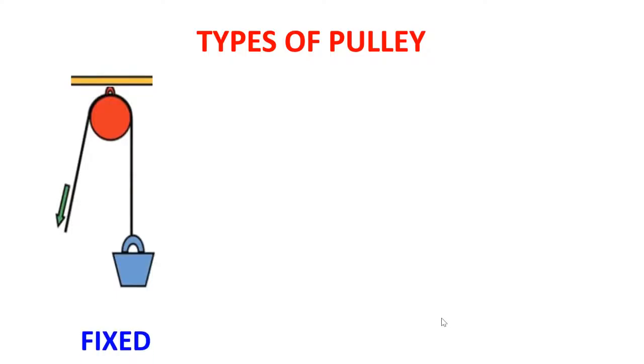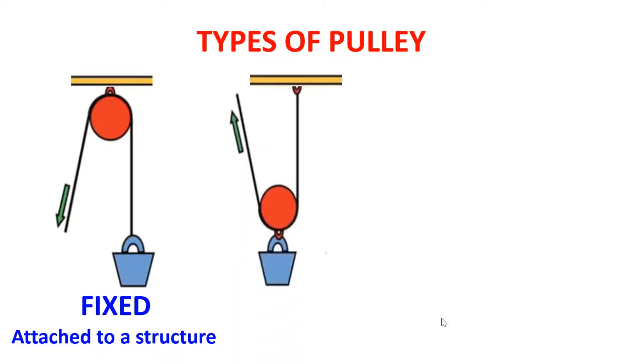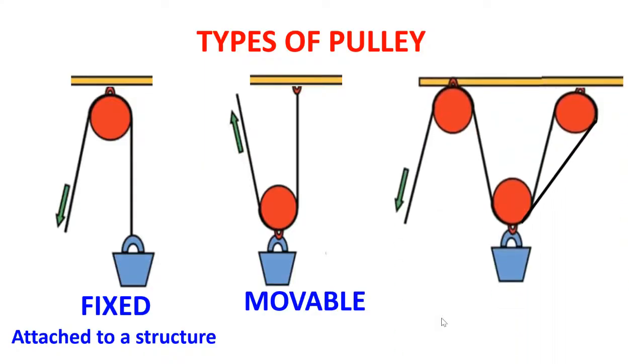Types of pulleys: when the pulley is attached to a structure, we call it a fixed pulley. When it's not attached to a structure, we call it a movable pulley. When we combine the fixed and movable types of pulleys in the same system, we call it a compound pulley.